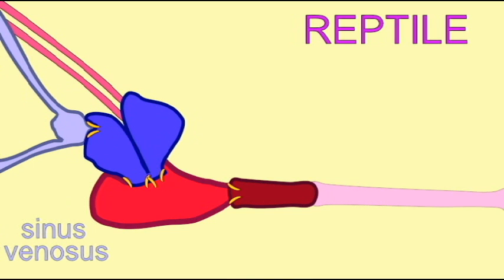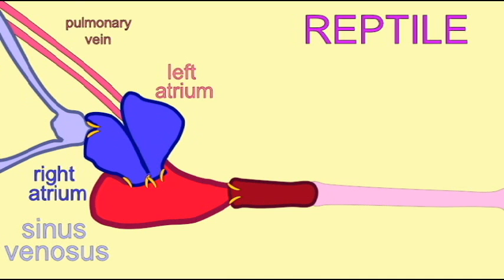However, as reptiles mature, not only do the atria separate into left and right chambers, there is a partial interventricular septum as well.